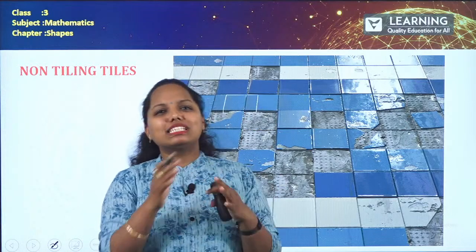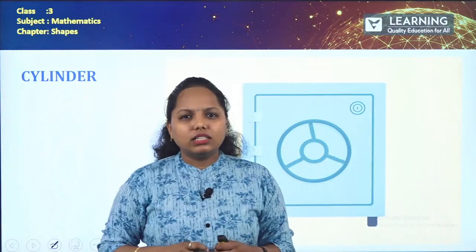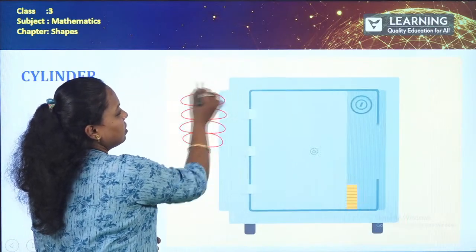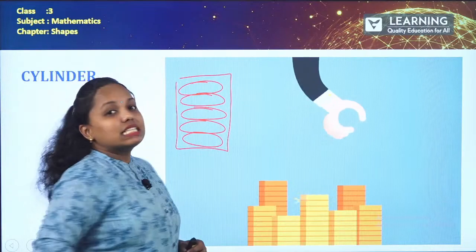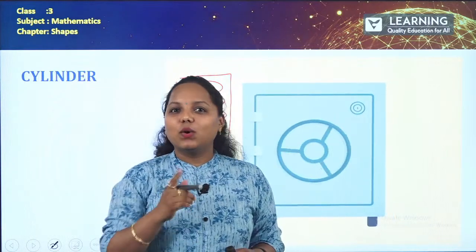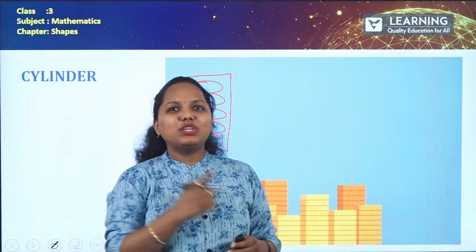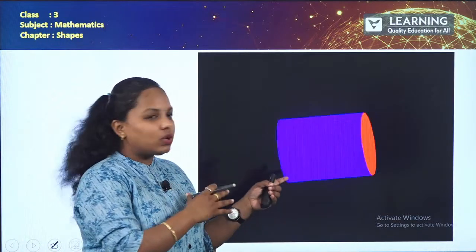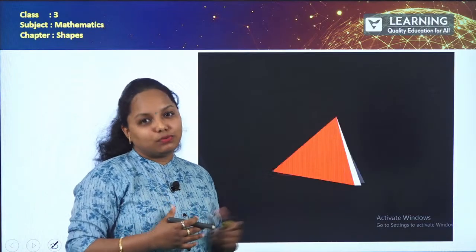Now imagine coins being piled up one on top of the other. When you look at the outer portion of those stacked coins, it looks like a cylinder. That is the cylinder shape. When you look at a picture, you can see the cylinder, triangle, and square all in one image. So cylinder is a 3D shape we have learned.